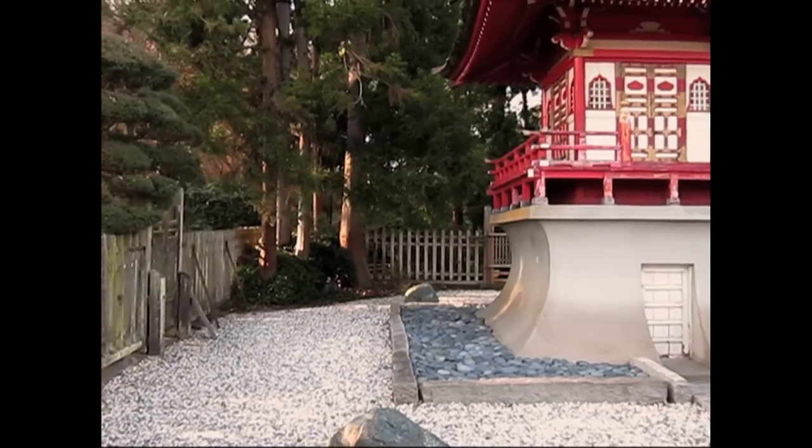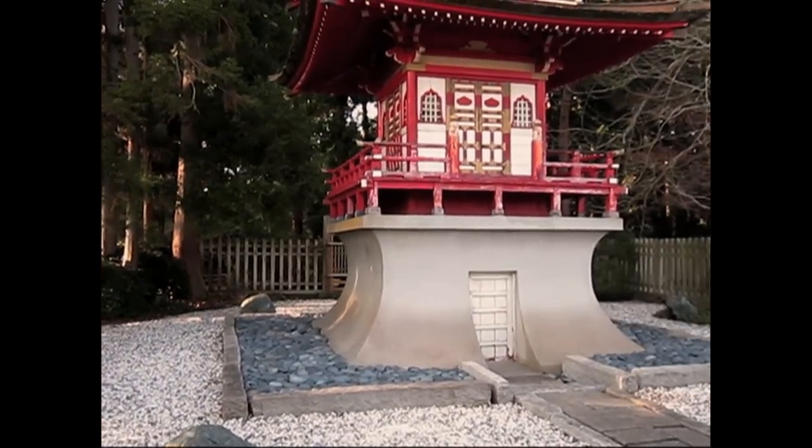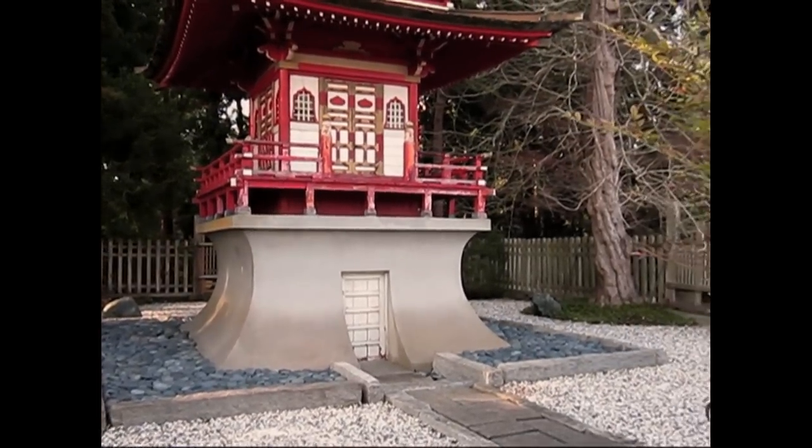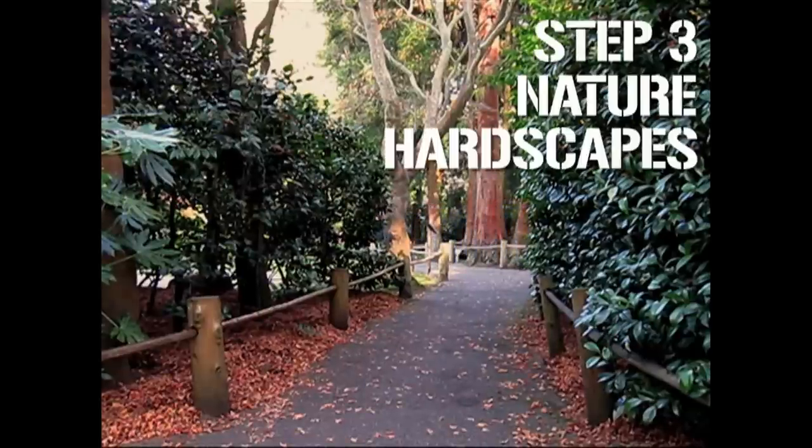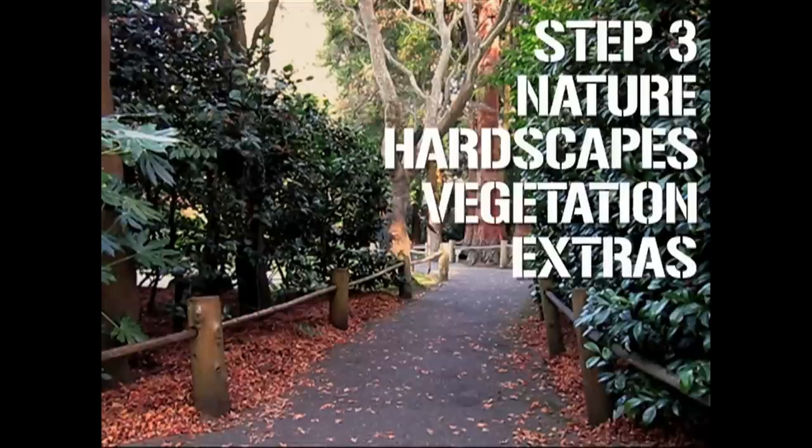Now we have our functionality organized, it's time to put things into the garden. To get the natural feel that Japanese gardens aspire to, we should design in this order: nature, hardscapes, vegetation, extras.